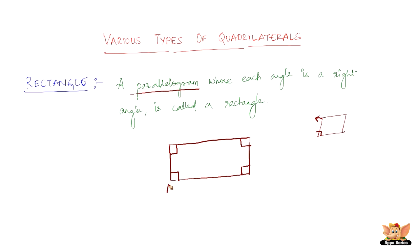We can name this like this: A, B, C, D. So this is called rectangle ABCD.